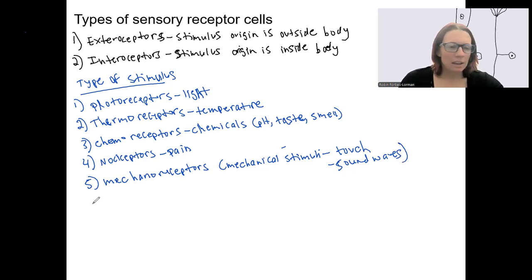Okay. And osmoreceptors, these detect osmolarity. So a type of interoceptor only. We'll talk about almost all of these, at least somewhat. Mechanoreceptors, we'll see a whole lot of different types.